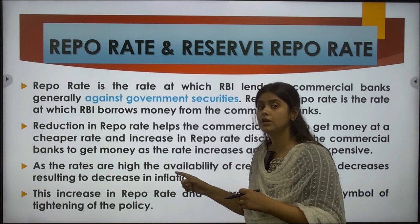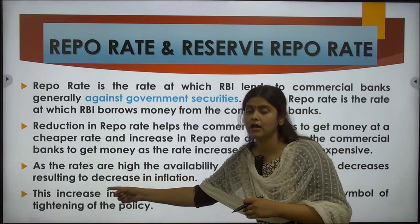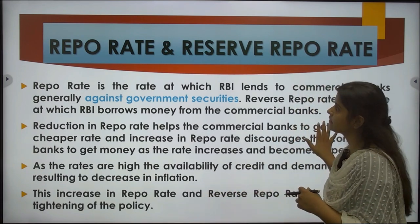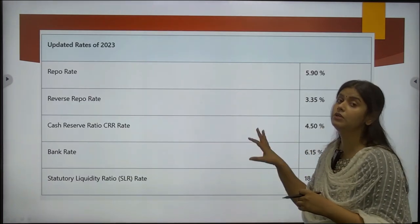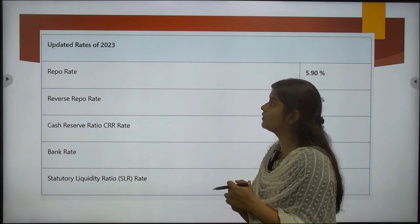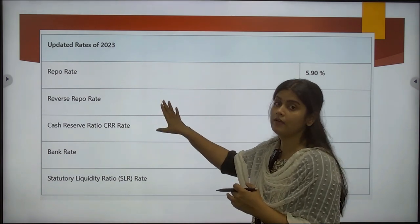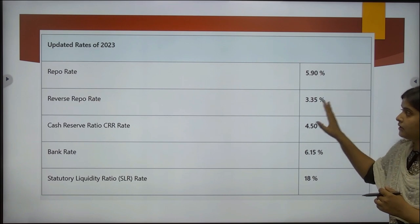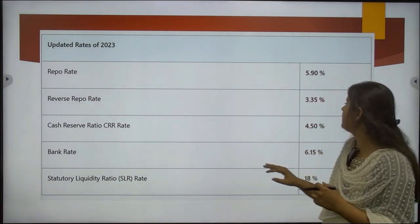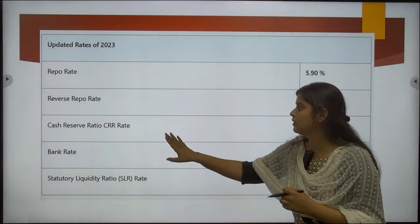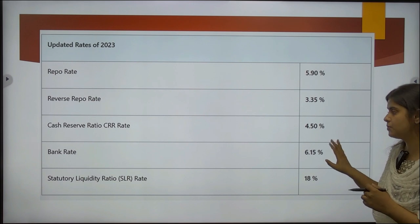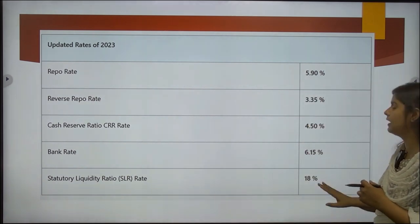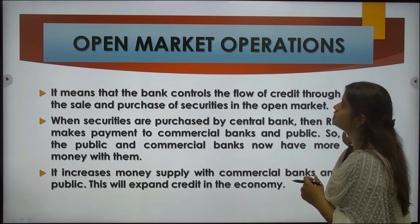When you have to control inflation, you have to charge high rates. The increase in repo rate and reverse repo rate is a symbol of tightening of the policy. These are the current rates — you need to check updated values when giving the exam as rates change frequently. At this point: repo rate is 5.90%, reverse repo rate is 3.35%, cash reserve ratio is 4.50%, bank rate is 6.15%, and statutory liquidity ratio is 18%.